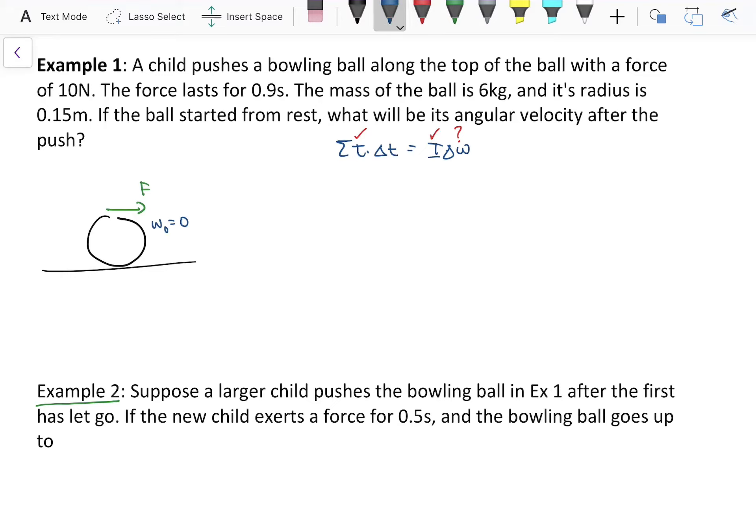So, the torque acting on the object, the net torque, should be the force, oops, that's not a tau. Sigma tau is equal to force times radius times the sine of the angle theta. Here I'm going to assume that the kid is pushing tangent to the circle, so the angle is going to be 90 degrees, so that's just equal to 1. So we would have 10 newtons multiplied by 0.15 meters, that would give us our net torque.